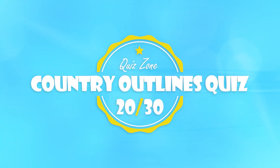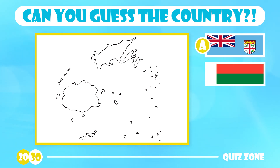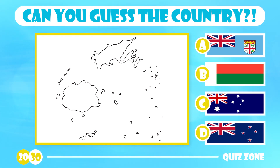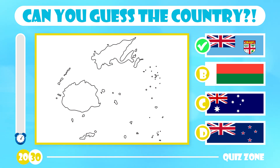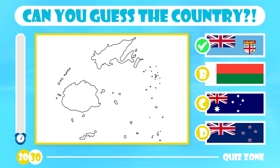This one is pretty hard. Guess this one. Is it Fiji, Madagascar, Australia or New Zealand? Fiji is a small country in the southern Pacific Ocean with over 330 islands. Only 110 islands are inhabitable and the country's population is over 900,000.